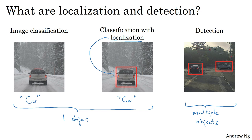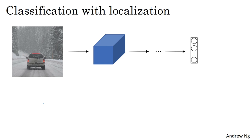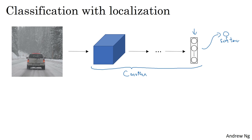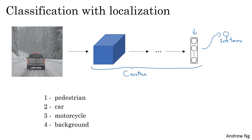The ideas you've learned about for image classification will be useful for classification with localization, and then the ideas you learn for localization will be useful for detection. You're already familiar with the image classification problem, in which you might input a picture into a ConvNet with multiple layers. This results in a vector of features that is fed to a softmax unit that outputs the predicted class. If you're building a self-driving car, your object categories might be pedestrian, car, motorcycle, or background — meaning none of the above — giving you a softmax with four possible outputs.